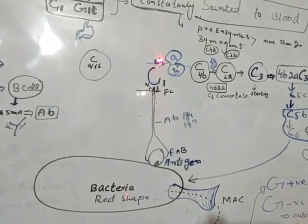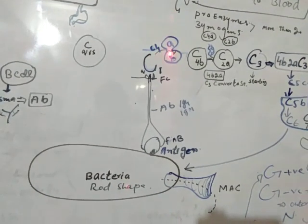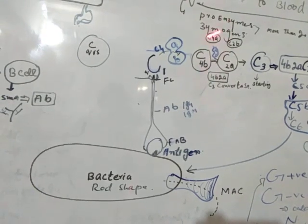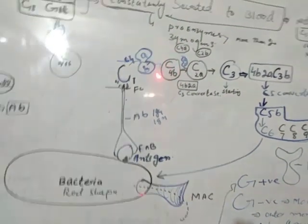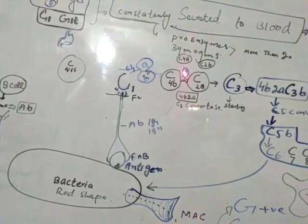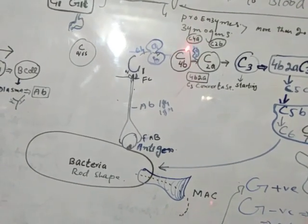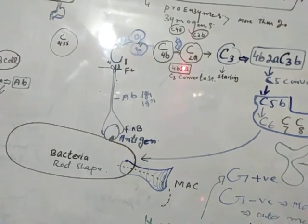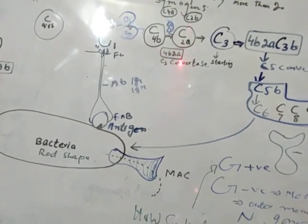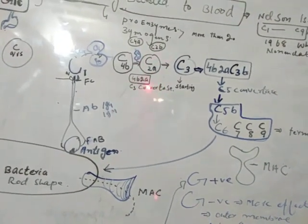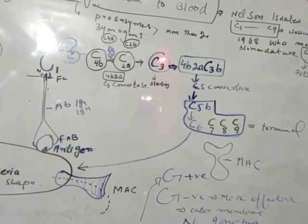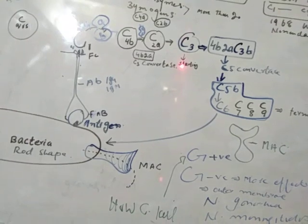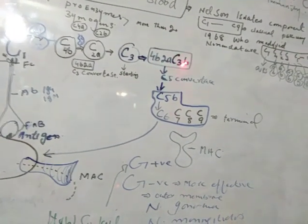Next, C1 activates C4. C4 has A and B parts — C4A is discarded and C4B remains active. C4B then activates C2, splitting it into C2A and C2B. C4B combines with C2A to form C4B2A, which we call C3 convertase. This C3 convertase activates C3 — the A portion of C3 is removed and C3B joins the complex.